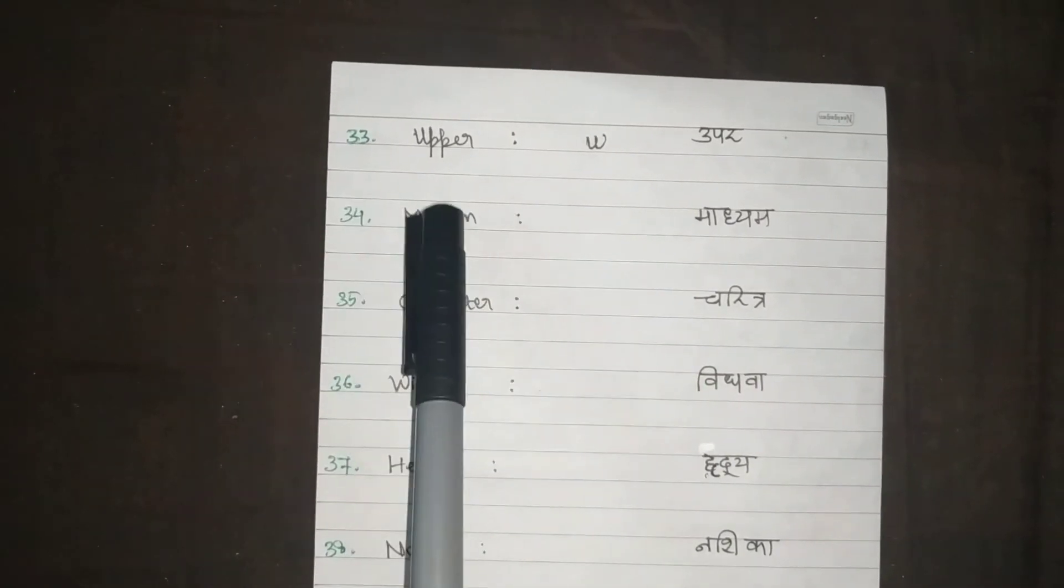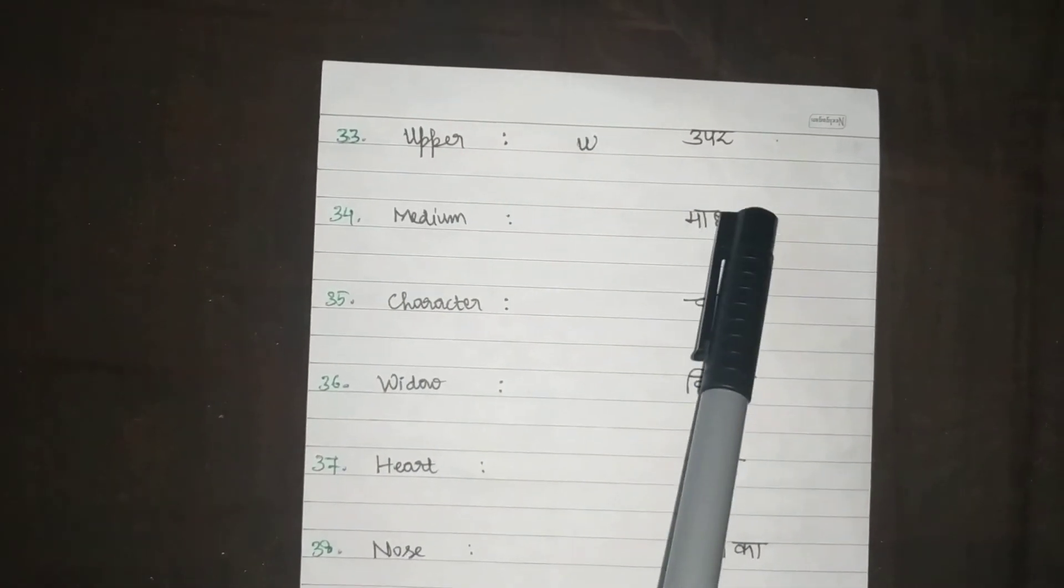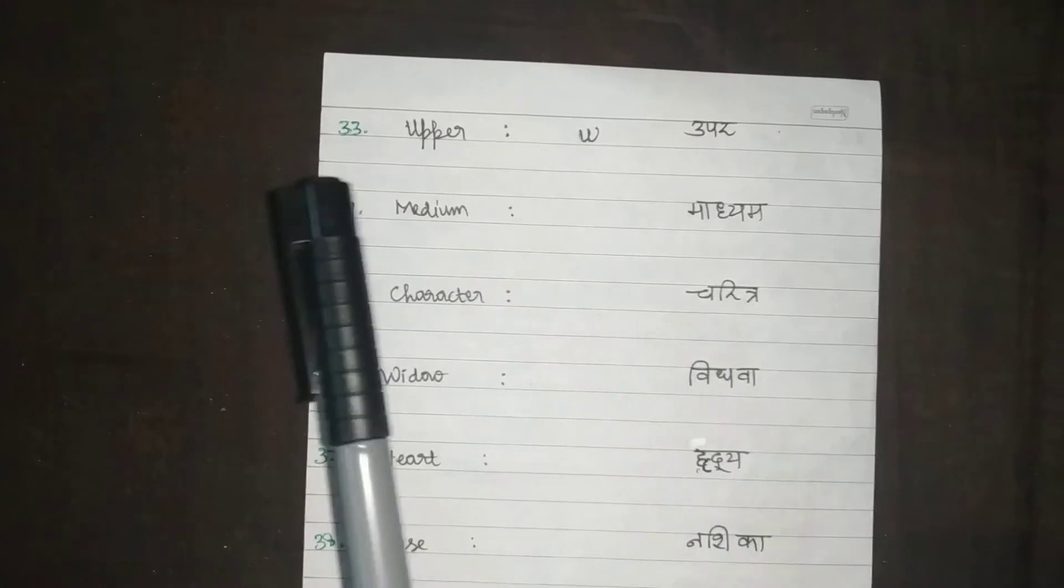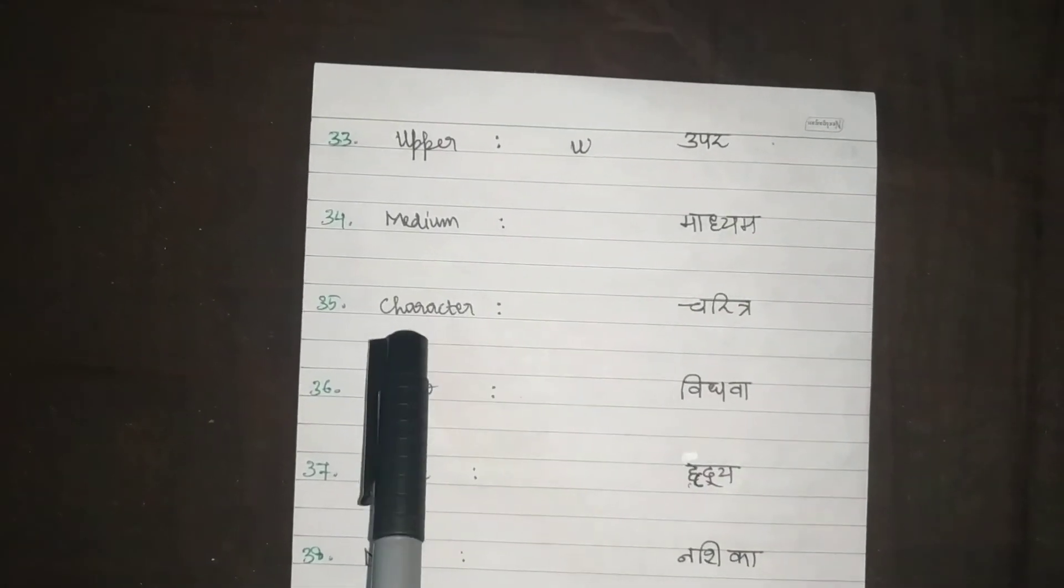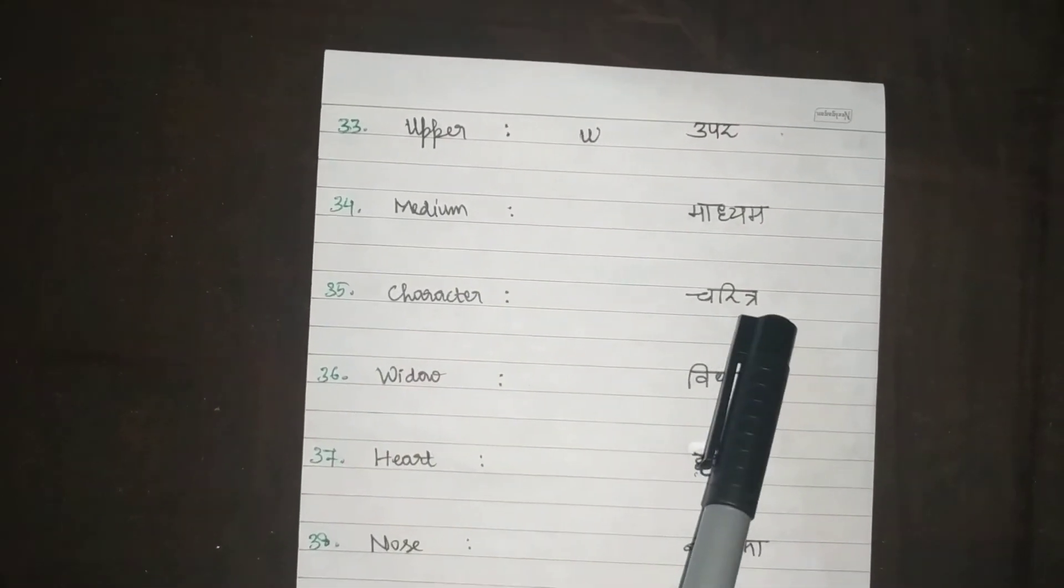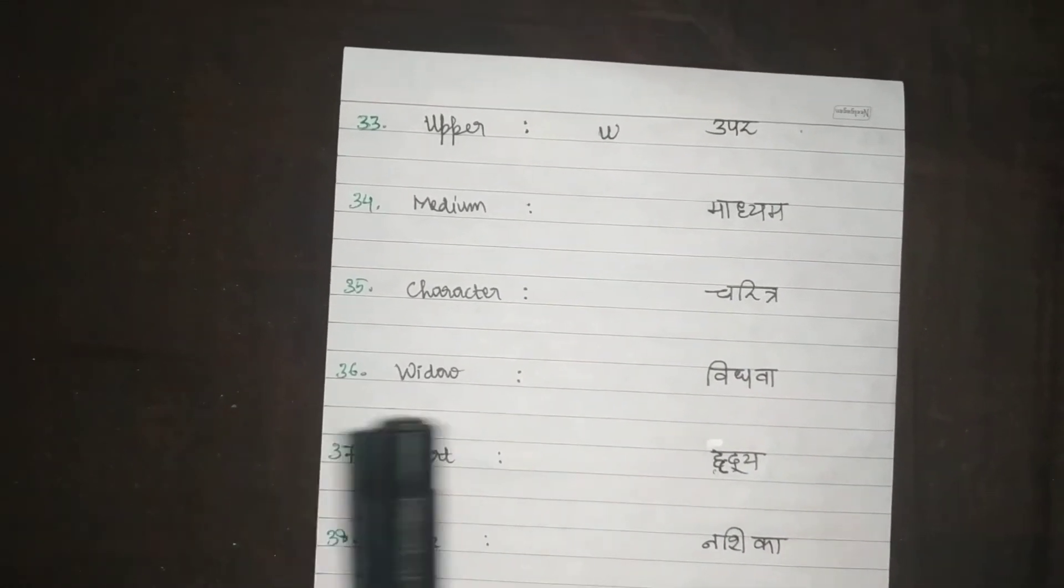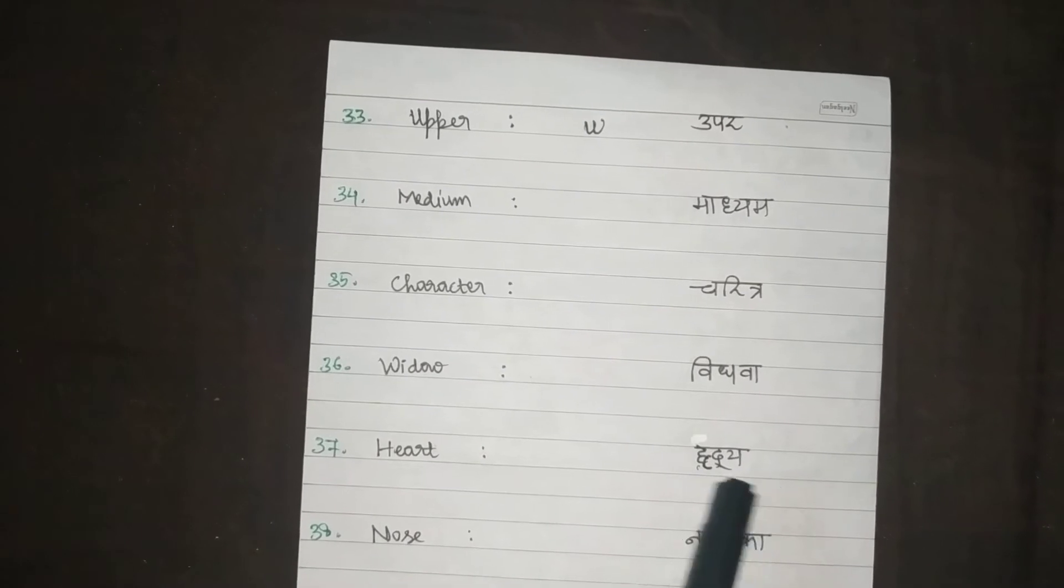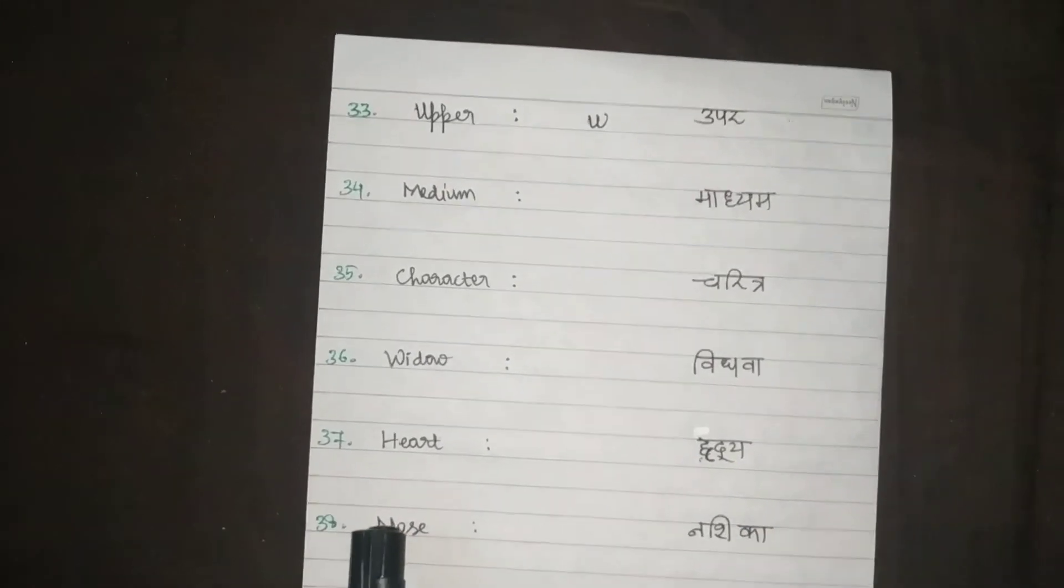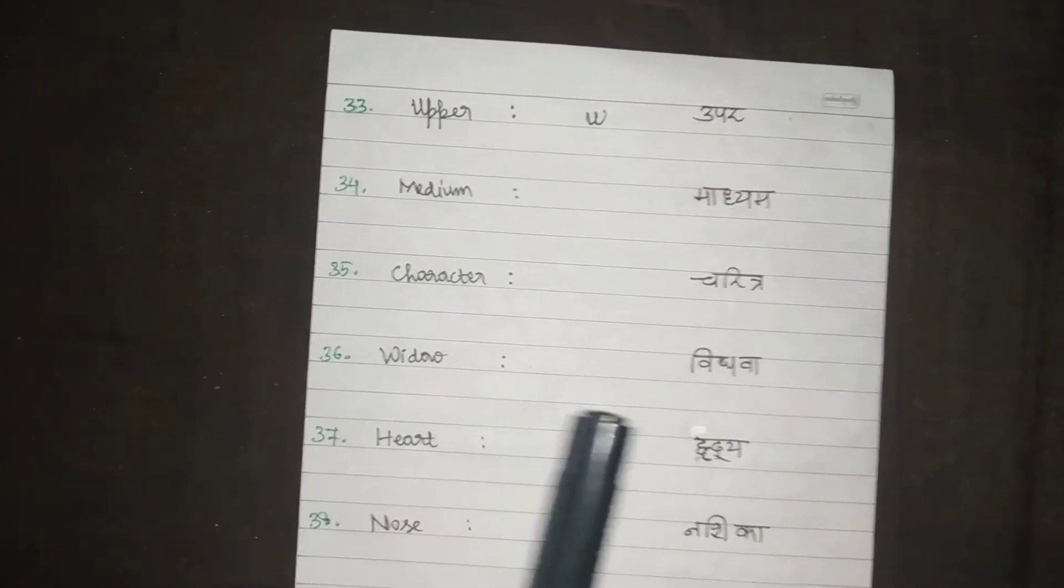Upper has come from the Sanskrit word Upar. Medium has come from Sanskrit word Madhyam. Character from Charitra. Widow from Vidhava. Heart from Hriday, Hardik. Nose has come from the Sanskrit word Nasika.